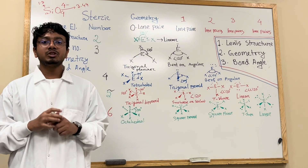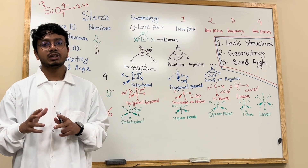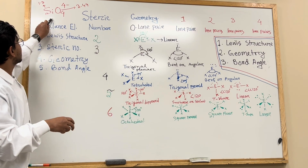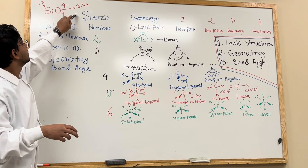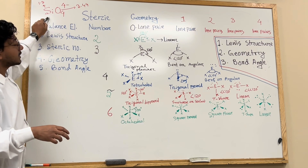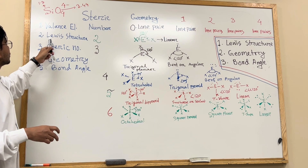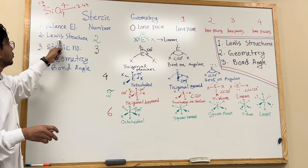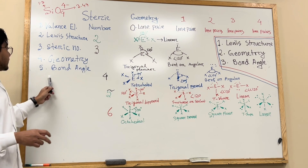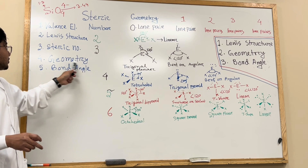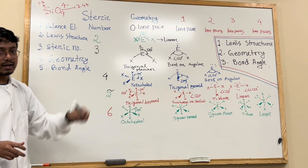Today's video I'm going to show you the Lewis structure of a specific compound, which is SiO4⁴⁻ (silicon tetraoxide, 4 minus). You can see the chemical formula here. I'm going to draw the Lewis structure, then the geometry, then show you the bond angle of this compound.